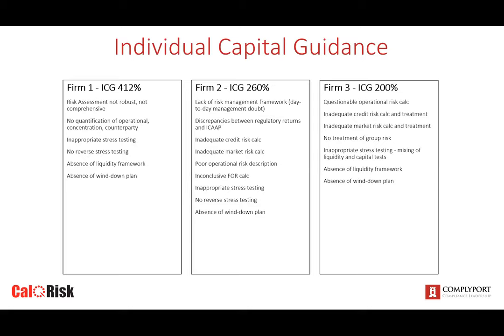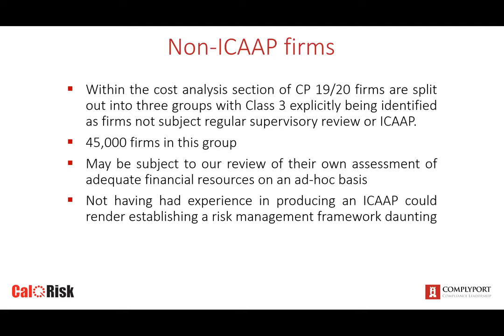Some ICAPs are good, but a lot are bad and a great number do not satisfy the FCA in terms of risk treatment. For non-ICAP firms, there's always proportionality. But it's clear that CP19/20 splits firms into three groups — Class 3 being the approximately 45,000 firms who do not have to supply an ICAP to the FCA on demand. They may be subject to review of their own assessment of adequate financial resources on an ad hoc basis. The FCA expects firms to have some sort of risk management framework in place, no matter how small the firm.